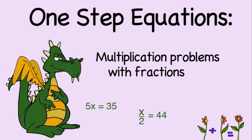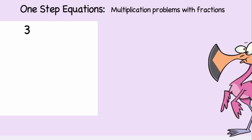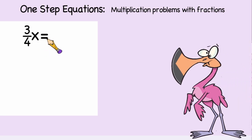So far we've looked at multiplying and dividing one-step equations with whole numbers. Now let's see what happens when fractions are involved. Let's start by looking at the problem: three-fourths x is equal to 15.